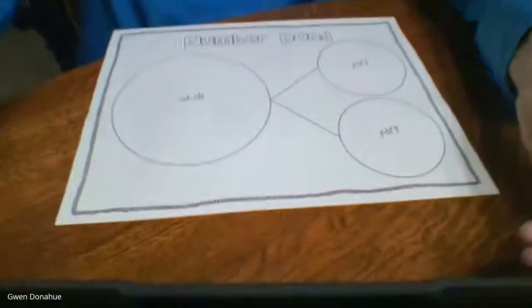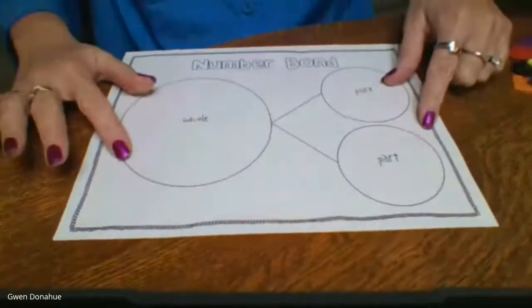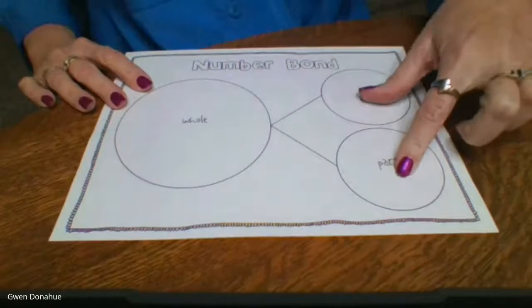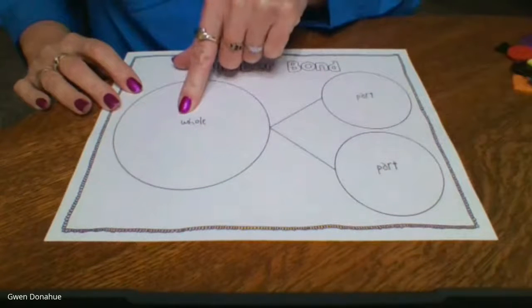We're going to do some on our paper first, and then we're going to do some on the chart paper without having our little pieces to use. I'm going to start by showing you my number bond paper. Remember, we've got part and a part, and that makes the whole.